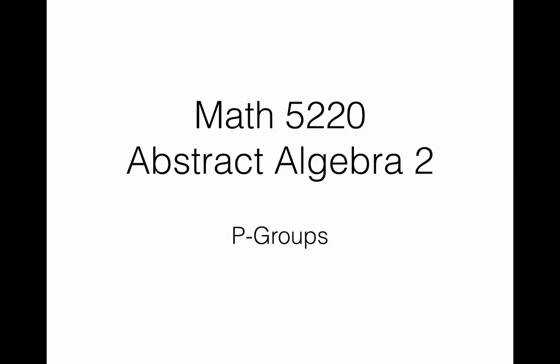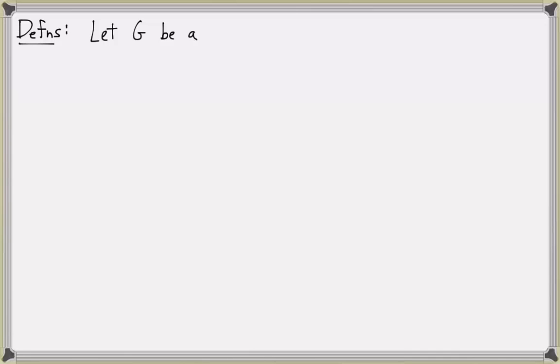In this lesson, we will define p-groups and prove a couple of results about p-groups. First, let's give some basic definitions. Throughout, we're going to let G be a group, and p will always represent a prime number.